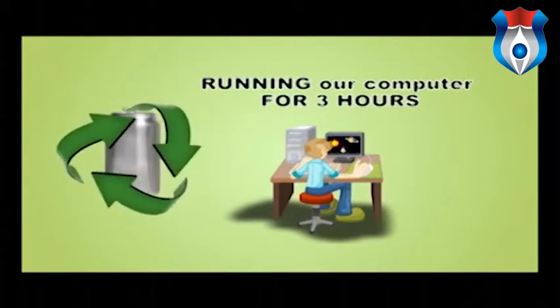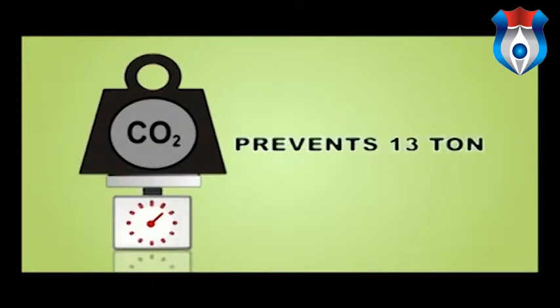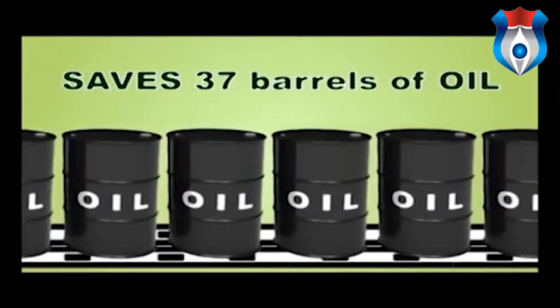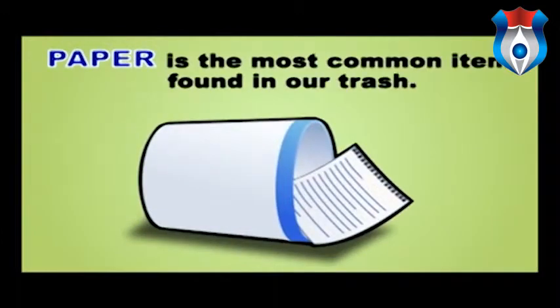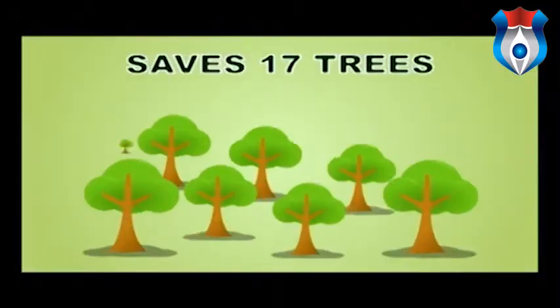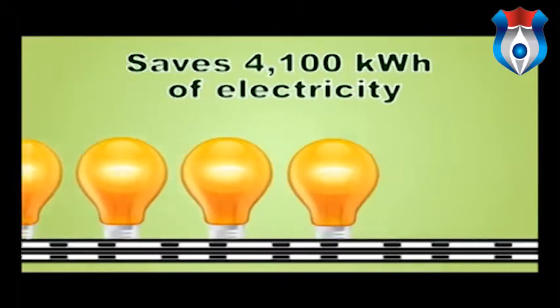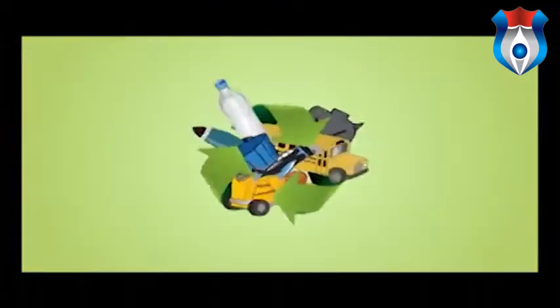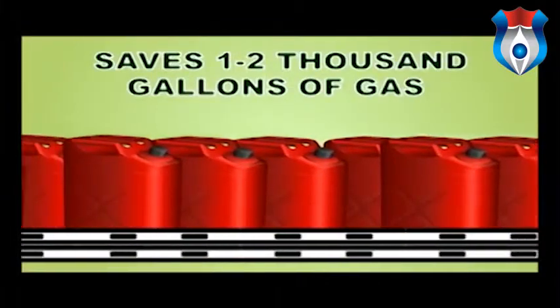One ton of aluminum recycled is equivalent to preventing 13 tons of carbon dioxide or saves 37 barrels of oil. Paper is the most common item found in our trash — recycling one ton of paper saves 17 trees or 4,100 kilowatt hours of electricity. Recycling one ton of plastic can save one to two thousand gallons of gas.